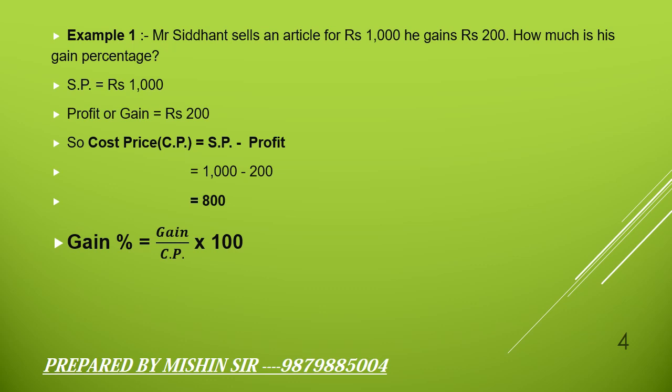Gain percentage is equal to gain upon cost price, multiplied by 100, which is equal to 200 upon 800, multiplied by 100. We get 25%.